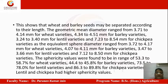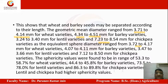Wheat and barley seeds may be separated according to their length. The geometric mean diameters range from 3.71 to 4.14 mm for wheat varieties, and 4.34 to 4.51 mm for barley. These are the sizes of different seeds and grains which need to be separated. Sphericity values were found to be in the range of 53.3 to 57.8 percent for wheat varieties.